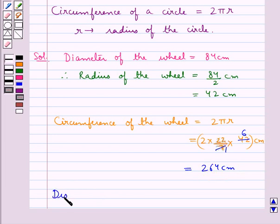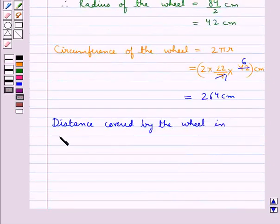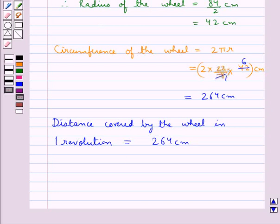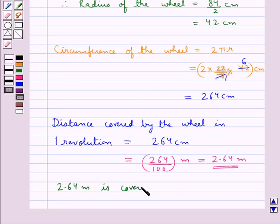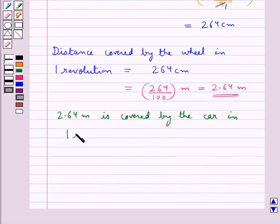Now, the distance covered by the wheel in one revolution is equal to the circumference of the wheel, which is 264 cm, or 264 upon 100 m, equal to 2.64 m. So 2.64 m is the distance covered by the car in one revolution.